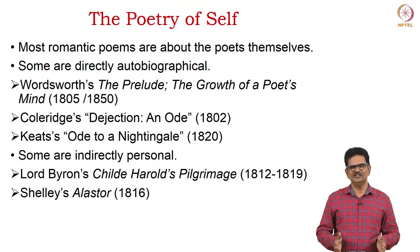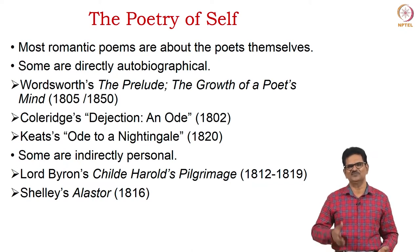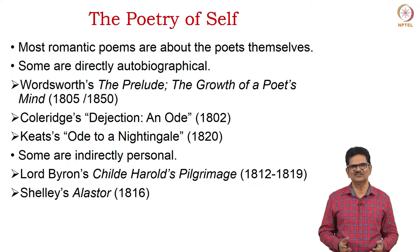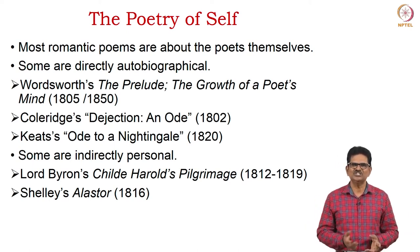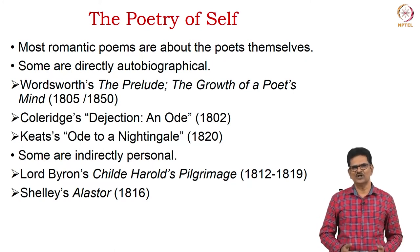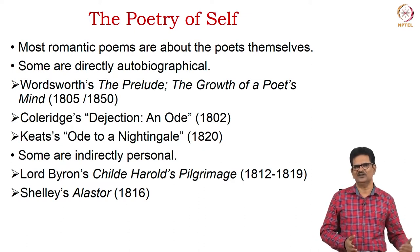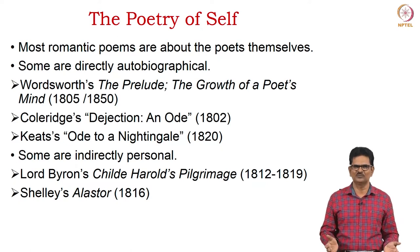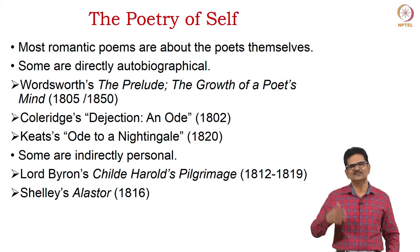As we can see, Romantic poetry is more or less all about the self of the poet — we call it the Poetry of Self. Most Romantic poems are about the poets themselves. Many of them are directly autobiographical, as we can see in Wordsworth — especially in The Prelude: The Growth of a Poet's Mind. We can find similar autobiographical poetry in Coleridge's poem Dejection: An Ode, and in Keats's Ode to a Nightingale. Some poems are indirectly autobiographical — for example, Lord Byron's Childe Harold's Pilgrimage and Shelley's Alastor. So some poets directly wrote about themselves, and some others wrote about themselves indirectly.